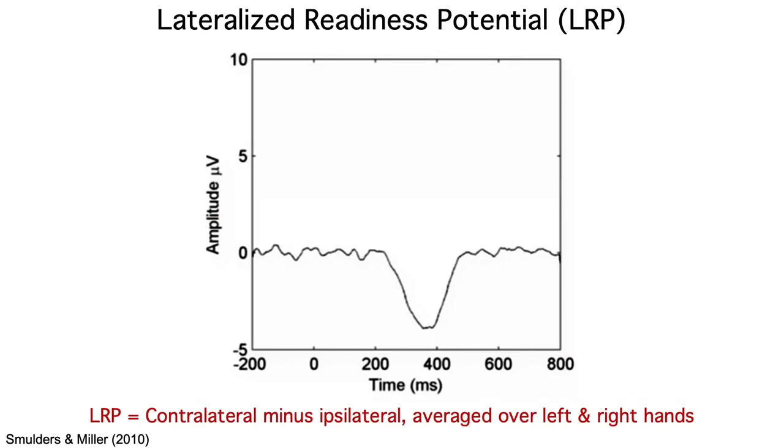We can collapse the data into a contralateral waveform and an ipsilateral waveform, and then make a contra minus ipsi difference wave that subtracts away all the non-lateralized activity and isolates the LRP.